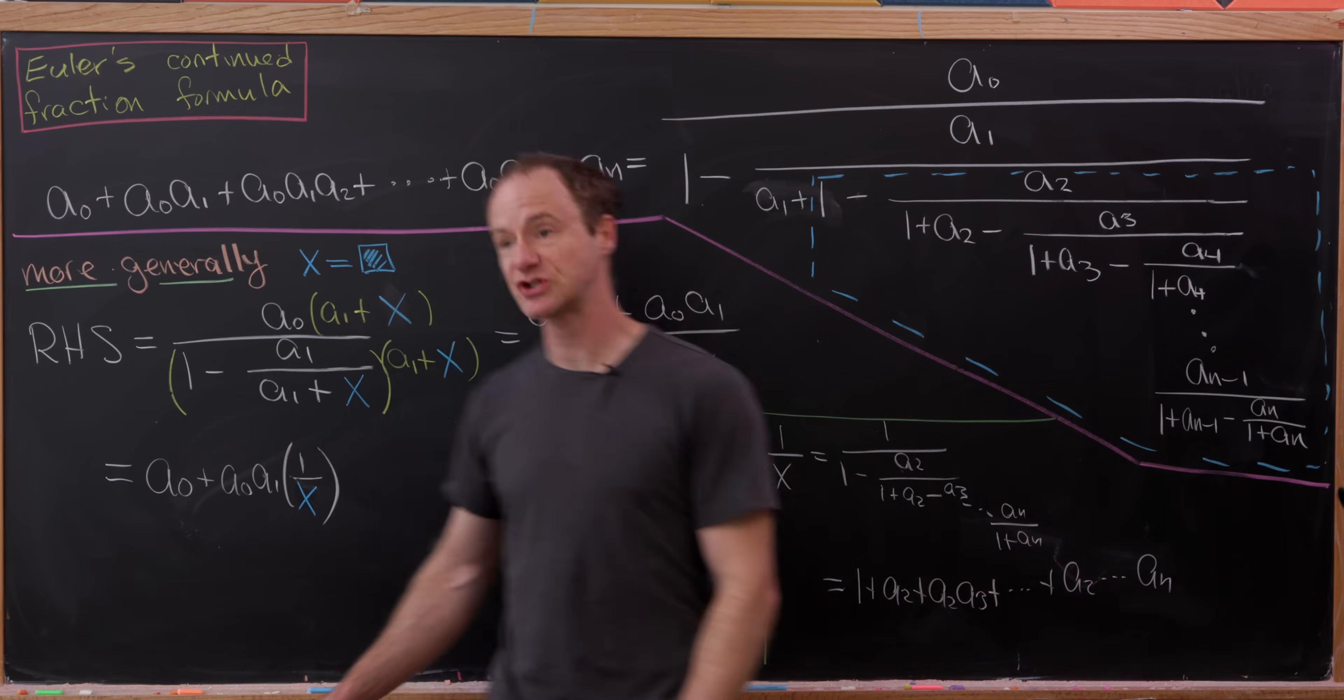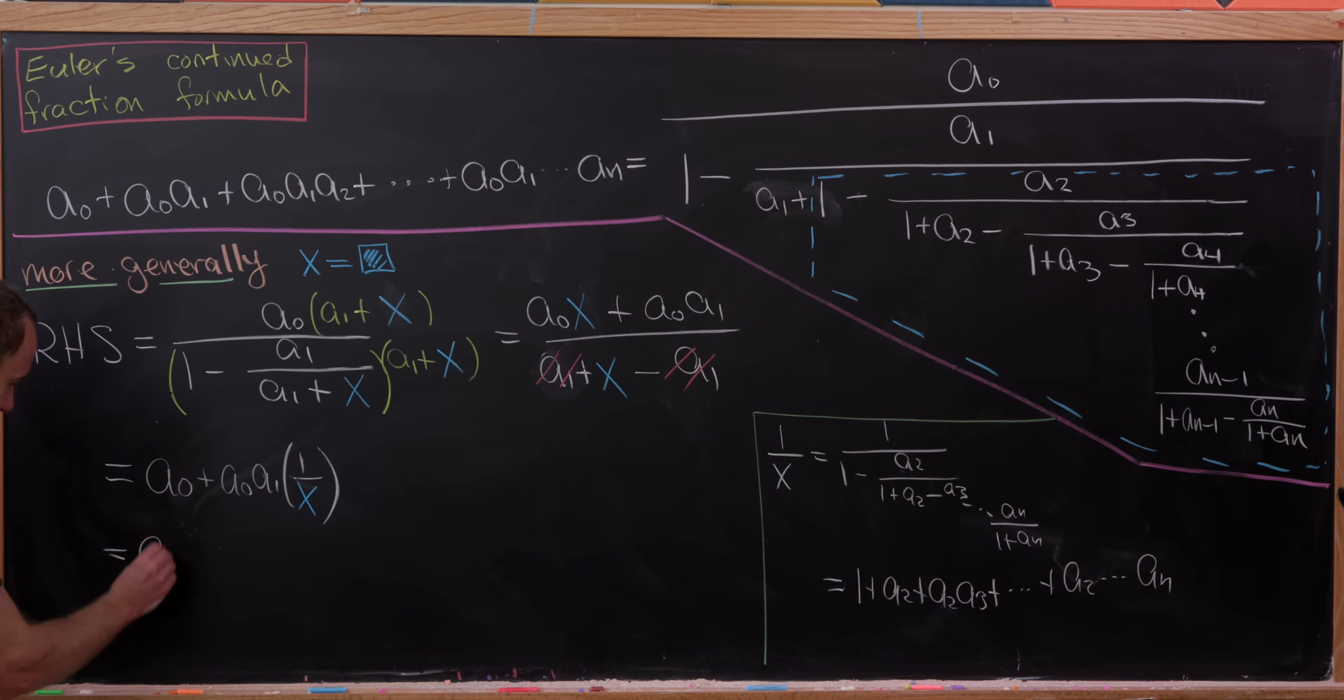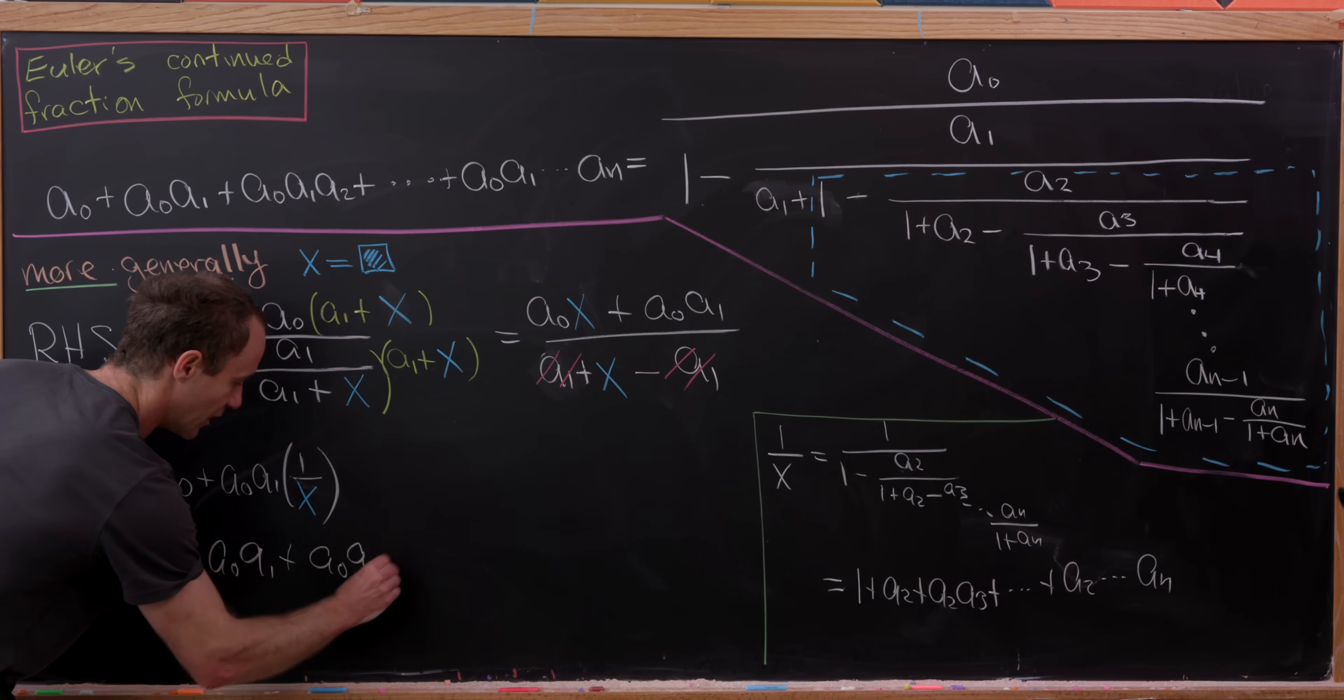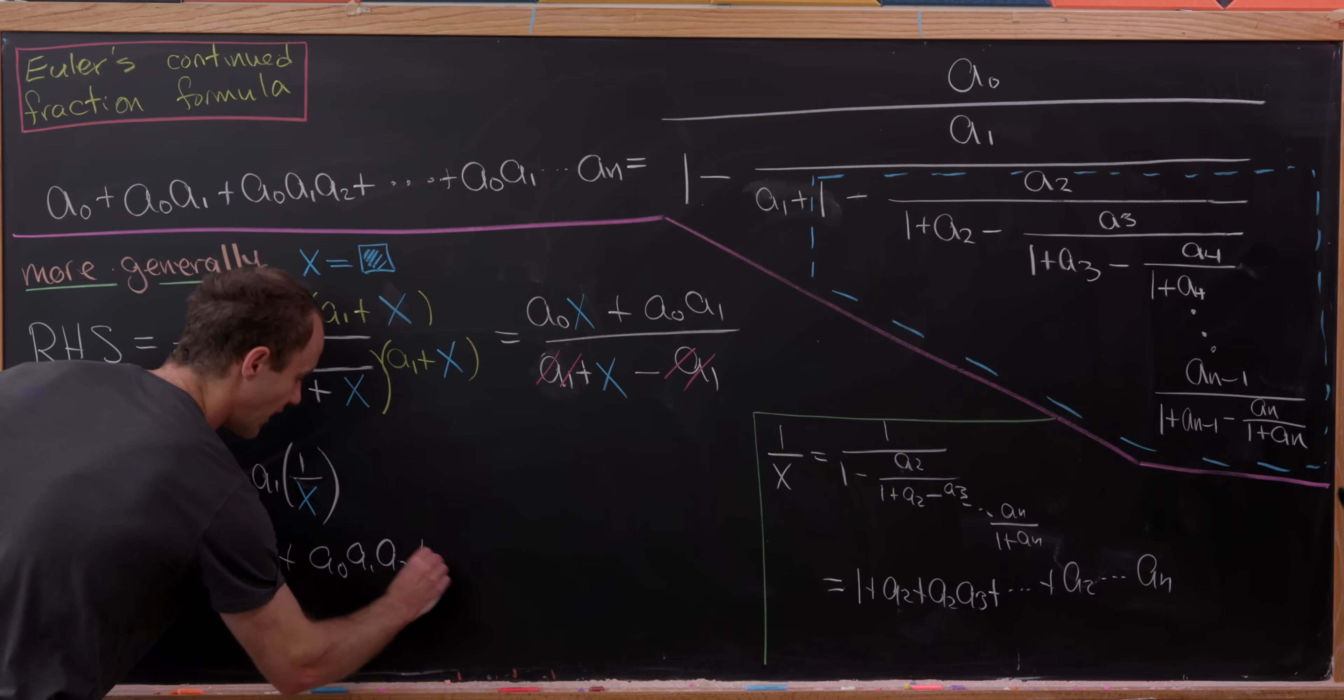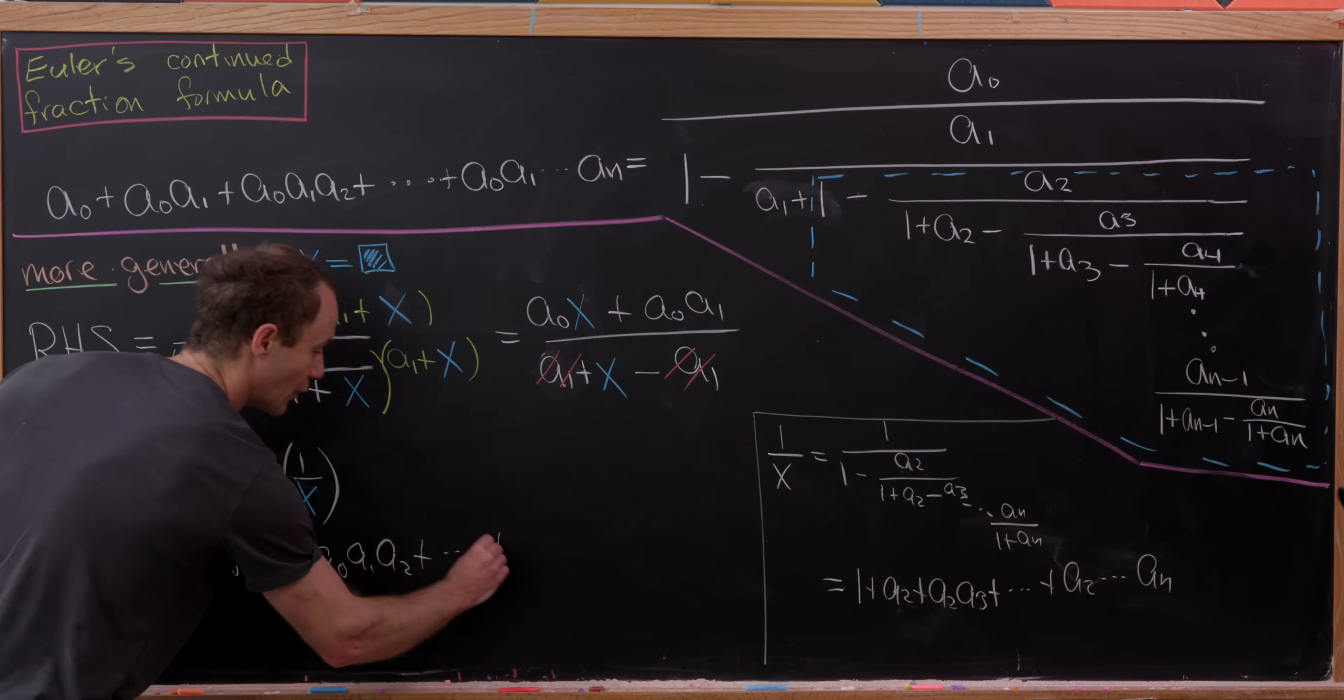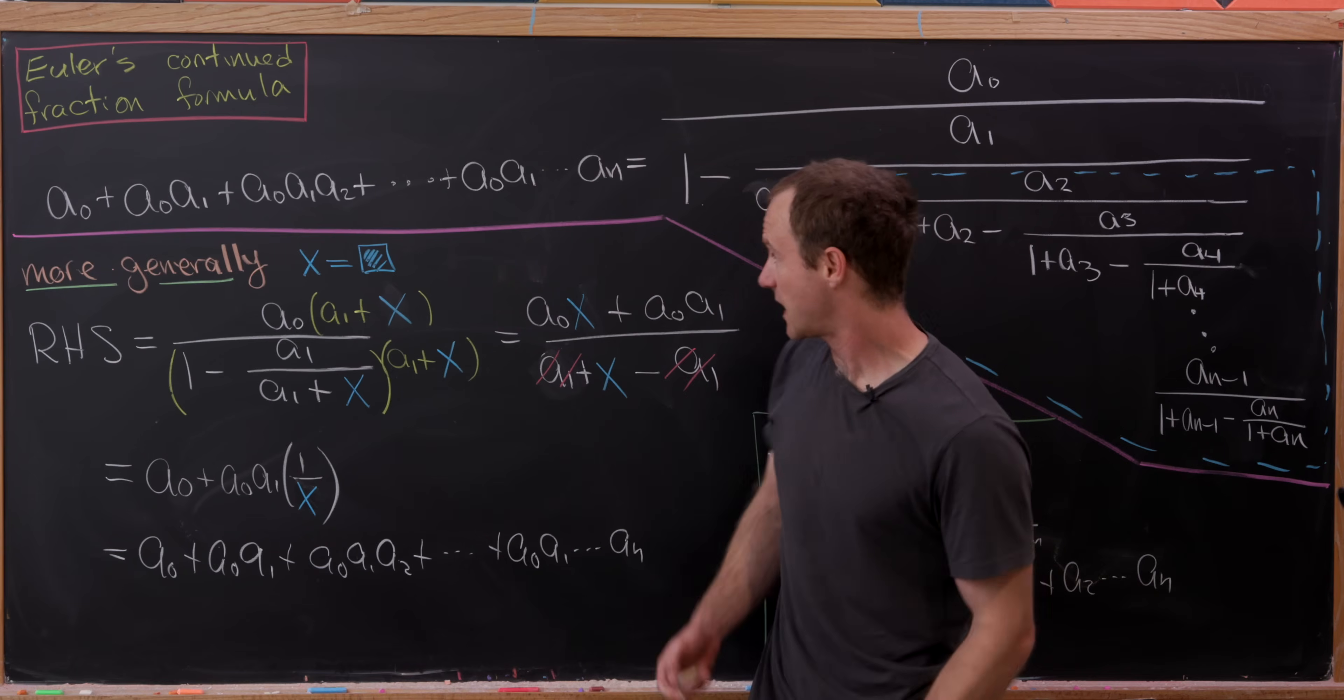But now let's put this expression for 1 over x over here and we'll see that we have exactly what we want. So we have a0 plus a0 times a1 times 1 plus a0 times a1 times a2, that would be like this term, plus the next one will be a0 a1 times a2 times a3, and then ending way over here at a0 times a1 multiplied all the way up to an. So there we have it.